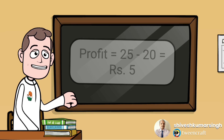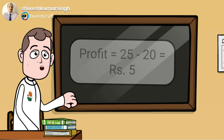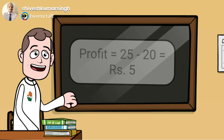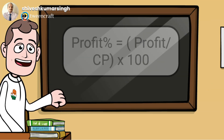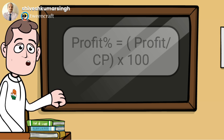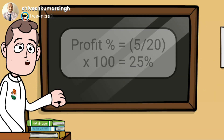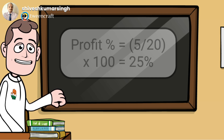Now we will see how to find the profit percent. Percent means we find it out of 100. Profit or loss — whatever you have — will be calculated on the cost price. So the formula is: Profit Percent = (Profit ÷ Cost Price) × 100. In this case, profit percent = (5 ÷ 20) × 100. Why 5? Because we had a profit of rupees 5. Why 20? Because 20 is the cost price. When you calculate it, you get 25% as the answer.